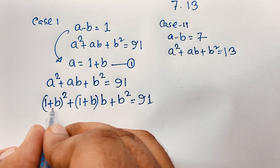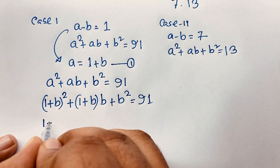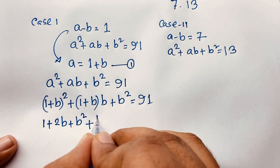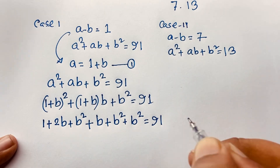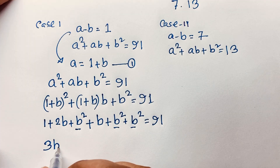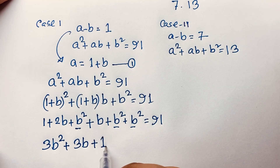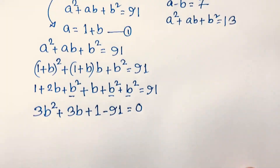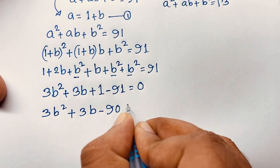Expanding using (1+b)² equals 1 plus 2b plus b², we get: 1 plus 2b plus b² plus b plus b² plus b² equals 91. Combining like terms gives 3b² plus 3b plus 1 equals 91, so 3b² plus 3b minus 90 equals 0.